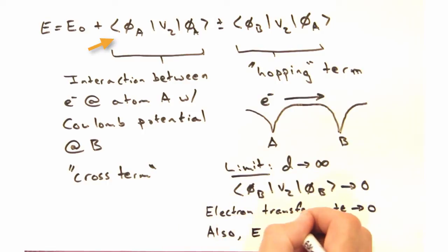Also in that limit, the cross term goes to 0. Then the energy is just the original, isolated atom energy. Okay, enough of this. Let's bring the atoms back together.